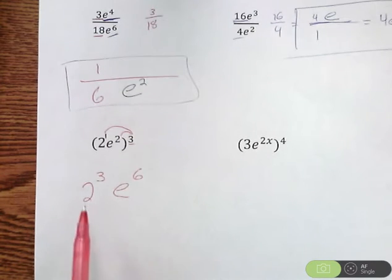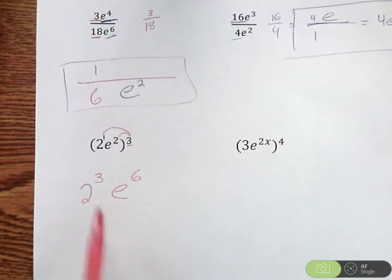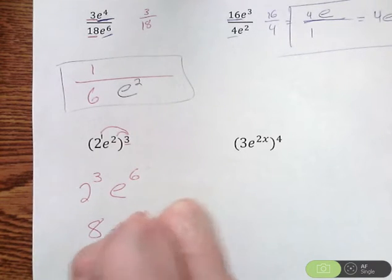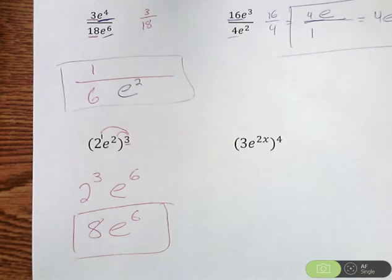Now we can clean this up a little bit. So I have 2 to the third e to the sixth. 2 to the third is 2 times 2 times 2, which is 8. So we get 8e to the sixth.